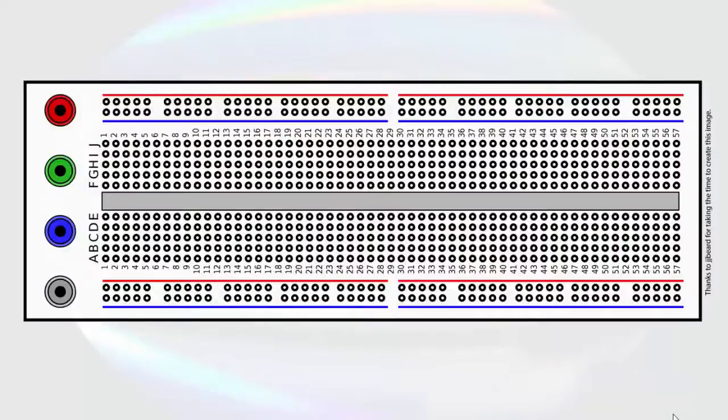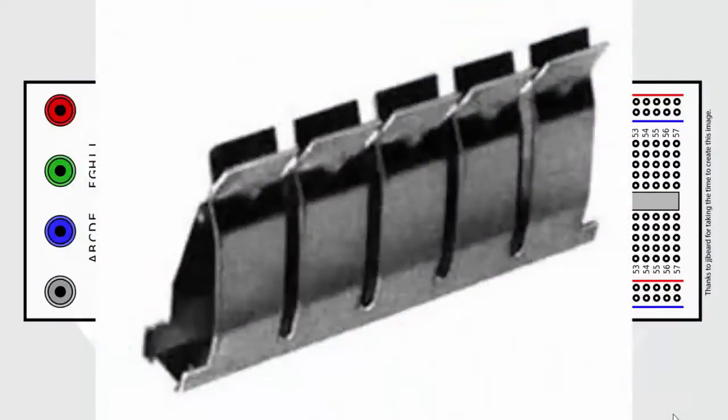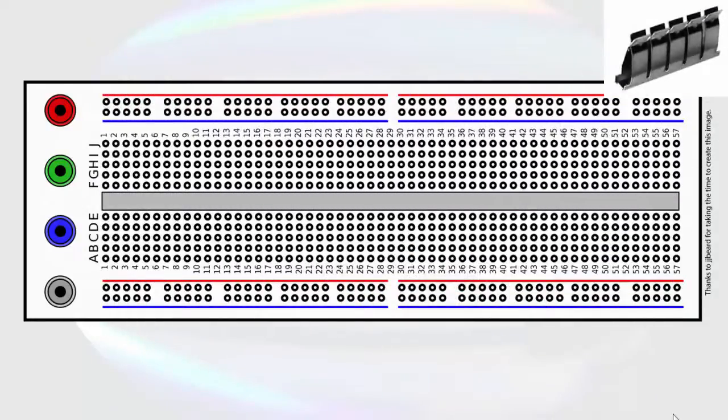Breadboards look like an array of holes. Behind each of these holes is a metal clip. When a wire or component lead is inserted into the breadboard, the clip firmly contacts the lead and an electrical connection is made. There are two arrangements of clips within the board. The center of the breadboard, or section of breadboard if we have a larger breadboard, is used to build our circuits.